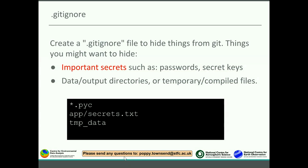If you create a .gitignore file at the top level of your Git repository, inside the main directory, this is a really useful feature that allows you to essentially hide things from Git. For example, if you had some important secrets such as passwords or secret keys for your server living inside some file or folder in your repository.